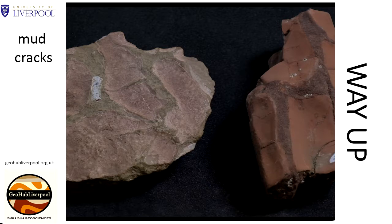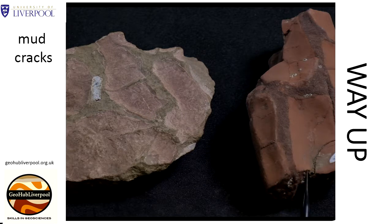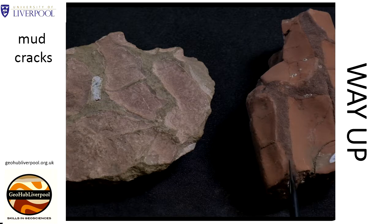These samples show sedimentary structures called mud cracks or desiccation cracks. Mud cracks formed when wet muddy sediment dried out, contracted, and cracks formed in the dried-up surface. Mud cracks may be later filled with younger sediment so that the cast of the mud cracks are formed.